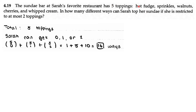In total there are five toppings. Since the maximum she can get is two toppings — at most two — that means she can get zero toppings, one topping, or two toppings. So we do C(5,0) plus C(5,1) plus C(5,2), which equals 1 plus 5 plus 10, which equals 16 different ways to choose her toppings.